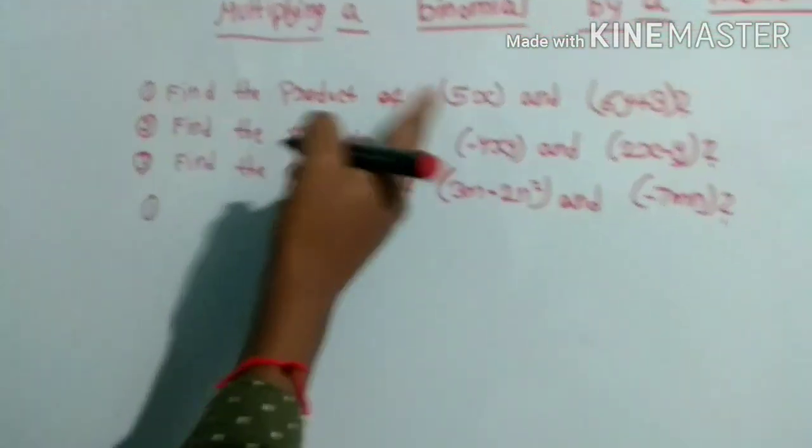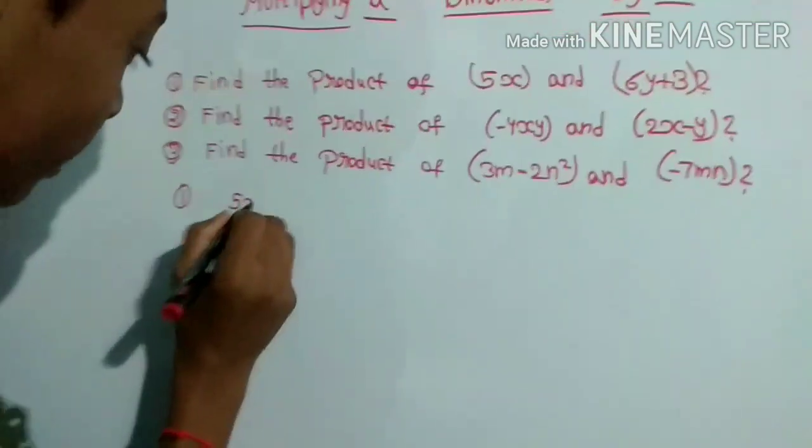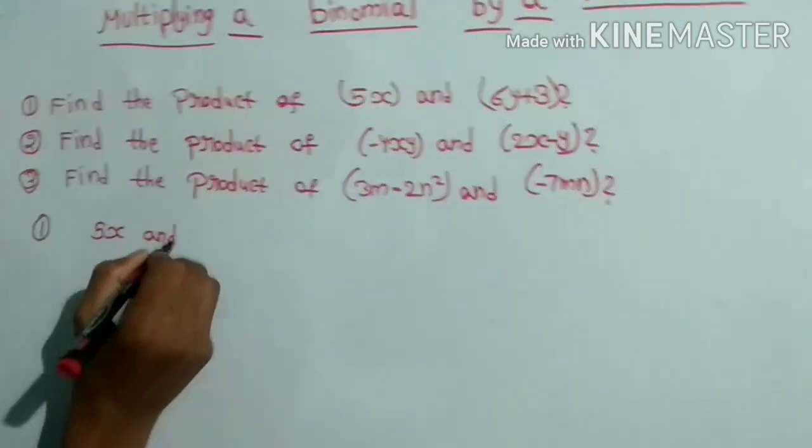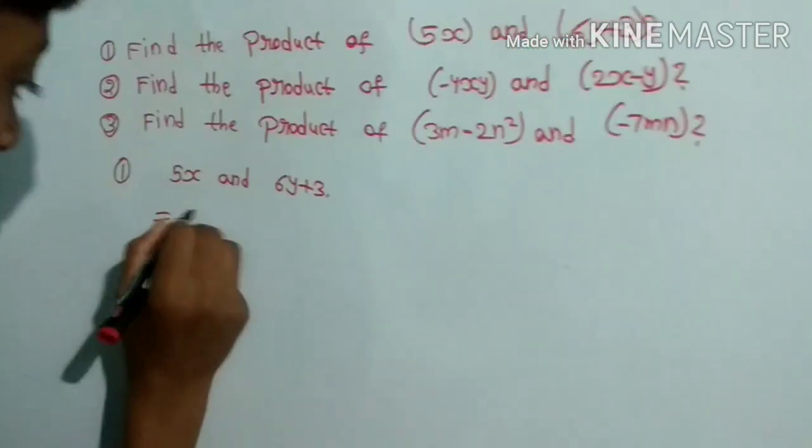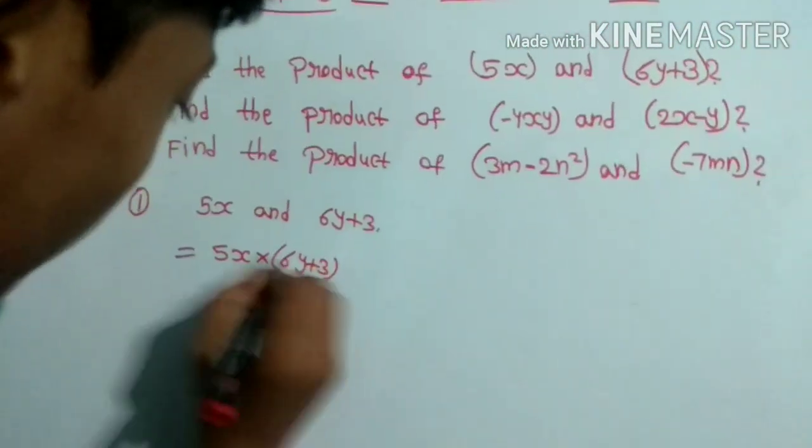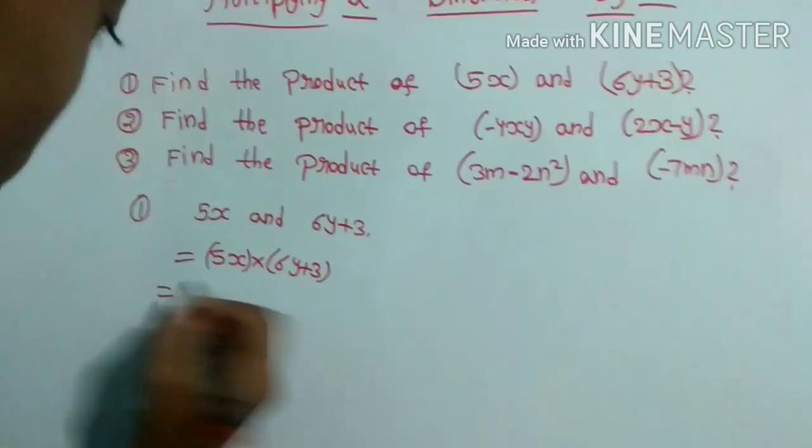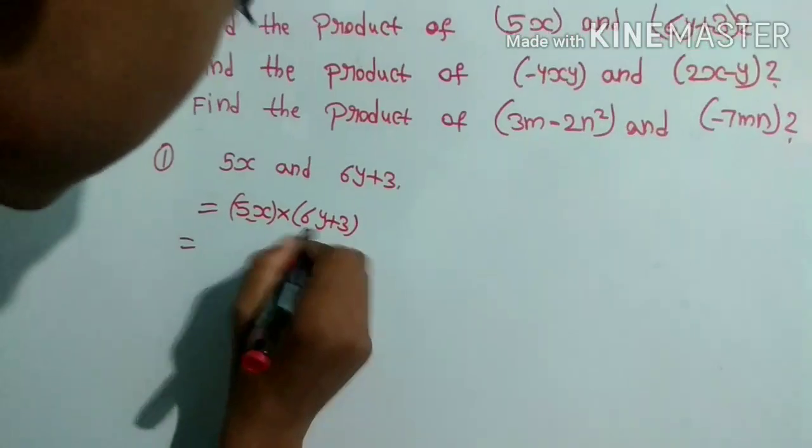First, find the product of 5x and 6y plus 3. So 5x into 6y plus 3. This is bracket. First, 5x is 6y.